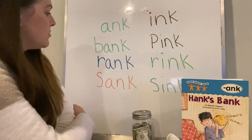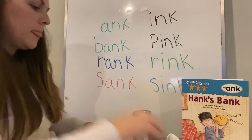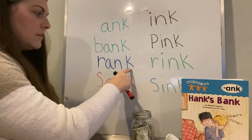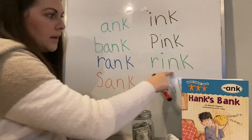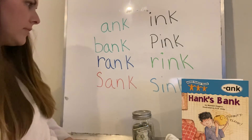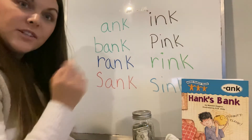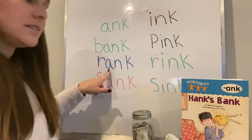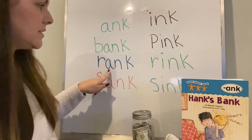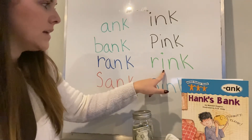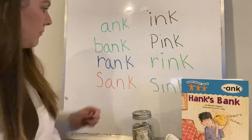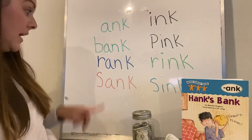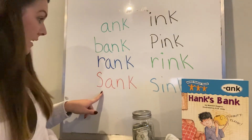I noticed something pretty interesting about these words. If you look here — ink, r-ink — only one letter is changing in each of these words. Rink has an A, a short A sound. And rink has an I, a short I sound. R-ink. R-ink. And the same thing with sank and sink.